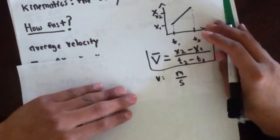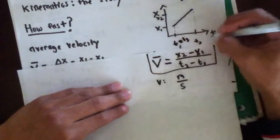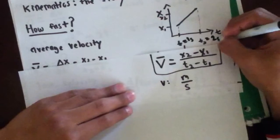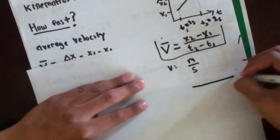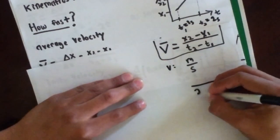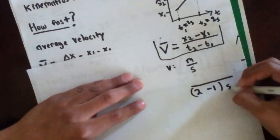For example, let's say I told you t1 was equal to one second, and t2 was equal to two seconds. So let's plug that into our equation. 2 minus 1, and the units are seconds, right?